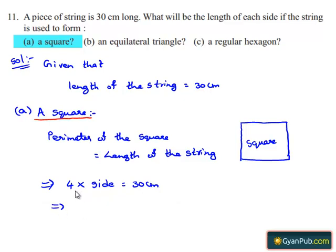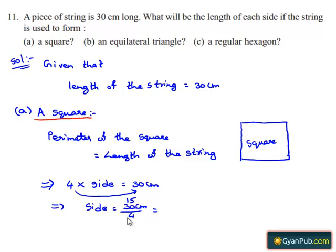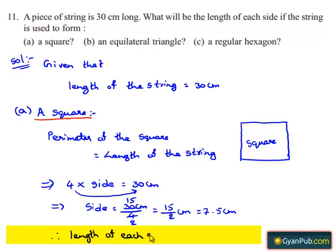By transposing 4 to the RHS, we get side is equal to 30 cm divided by 4. Here 30 and 4 are both multiples of 2, so 2 goes into 30 by 15 times and into 4 by 2 times, which gives 15 upon 2 cm, which in decimal form gives 7.5 cm. Therefore, the length of each side of the square is equal to 7.5 cm.